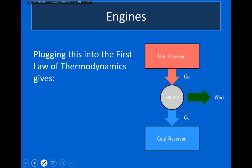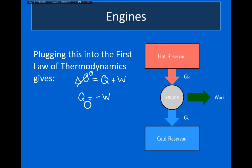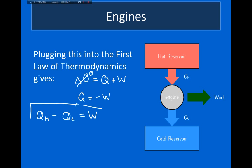Because the change in internal energy is zero, we can simplify the first law of thermodynamics. The first law says the change in internal energy equals the heat given to the system plus the work done on the gas. Since delta U equals zero, Q equals minus the work. We can further rewrite Q as Q sub H minus Q sub C — the heat given to the engine minus the heat lost — and this equals the work done by the engine.